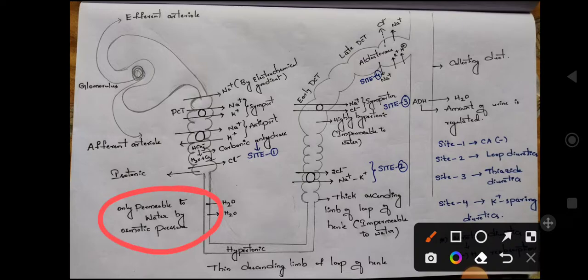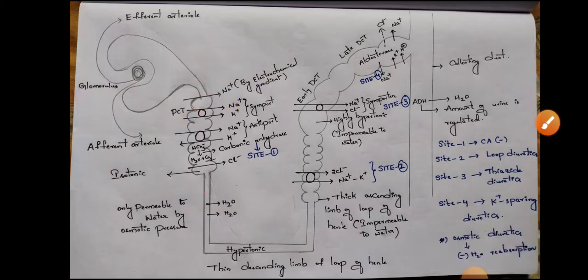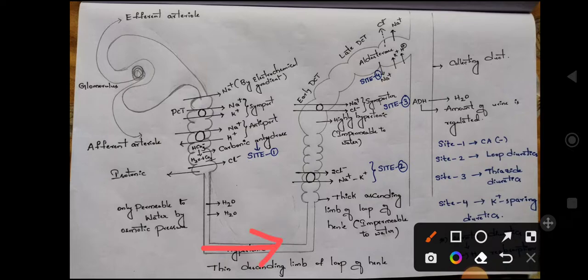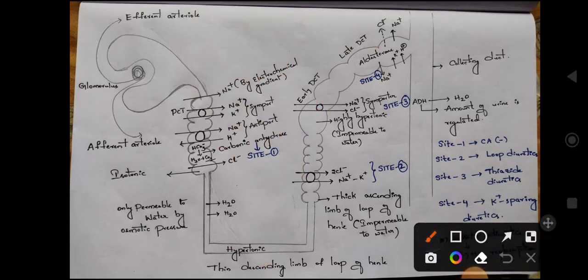The isotonic fluid then enters the thin descending limb of the loop of Henle. Here, water reabsorption takes place — this region is only permeable to water by osmotic pressure, meaning no salt is reabsorbed at this stage. As water reabsorption continues, the fluid becomes hypertonic.